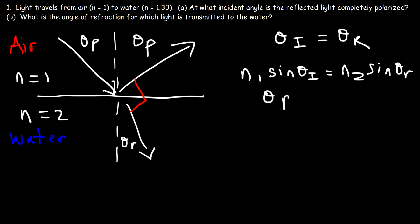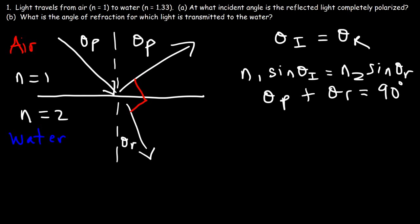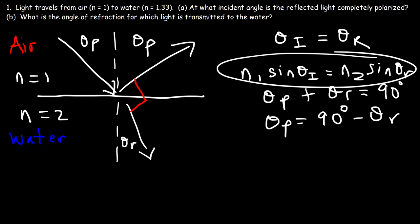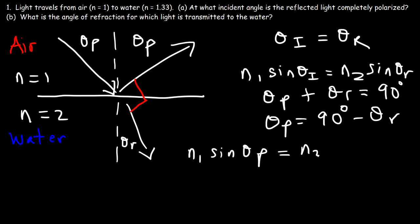So we can say that theta_p plus theta_r equals 90. Note that even though the reflected ray is completely polarized, the refracted ray is only partially polarized. From this formula, theta_p equals 90 minus theta_r, meaning the polarizing angle is 90 degrees minus the refracted angle. Going back to Snell's law: n1 sine theta_p equals n2 sine theta_r.